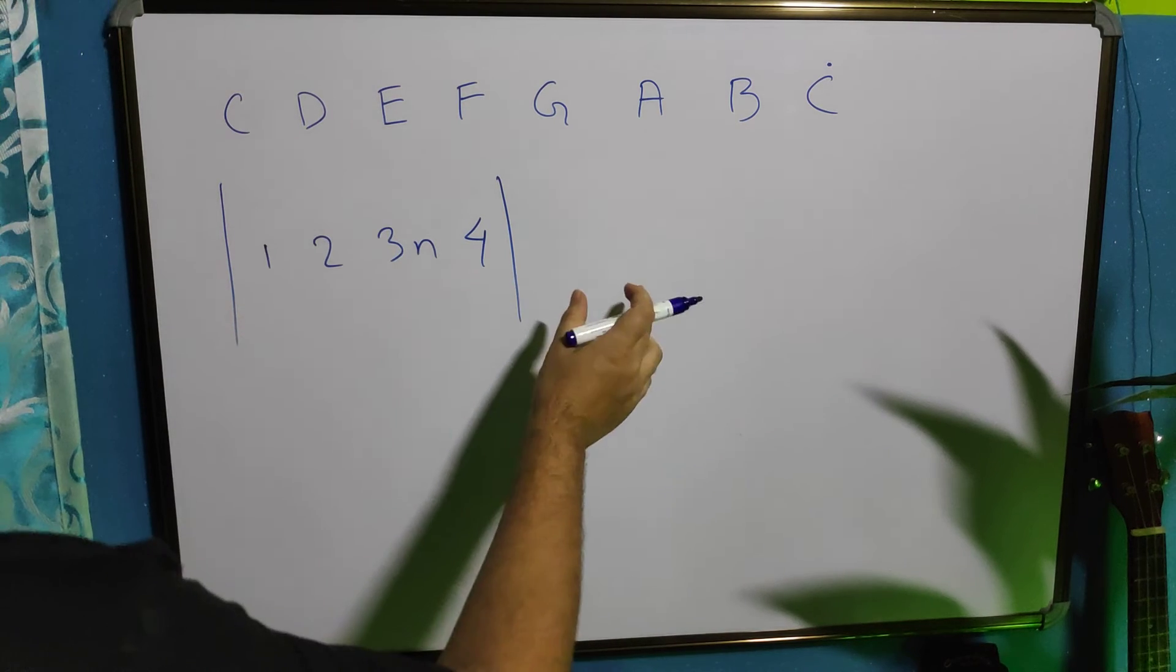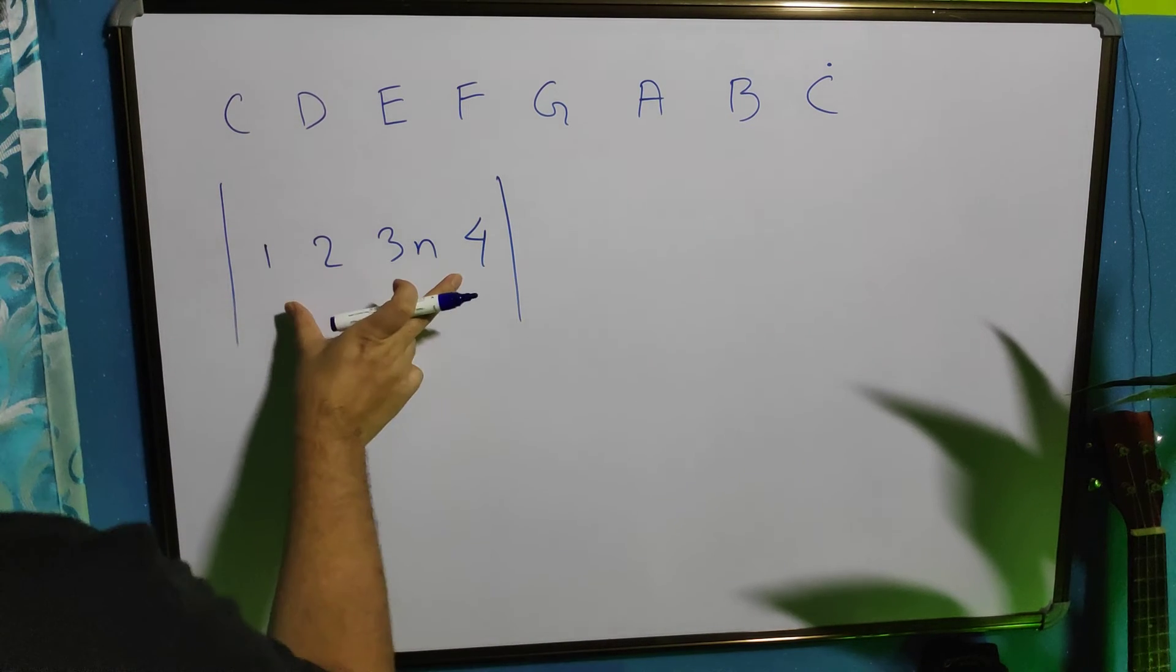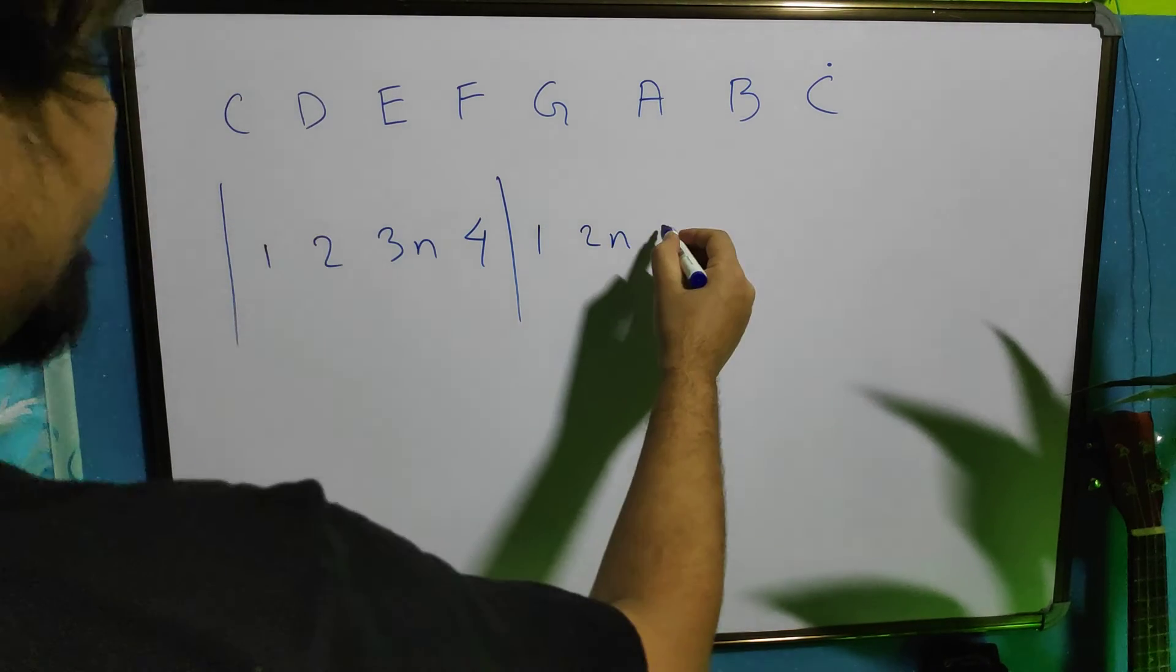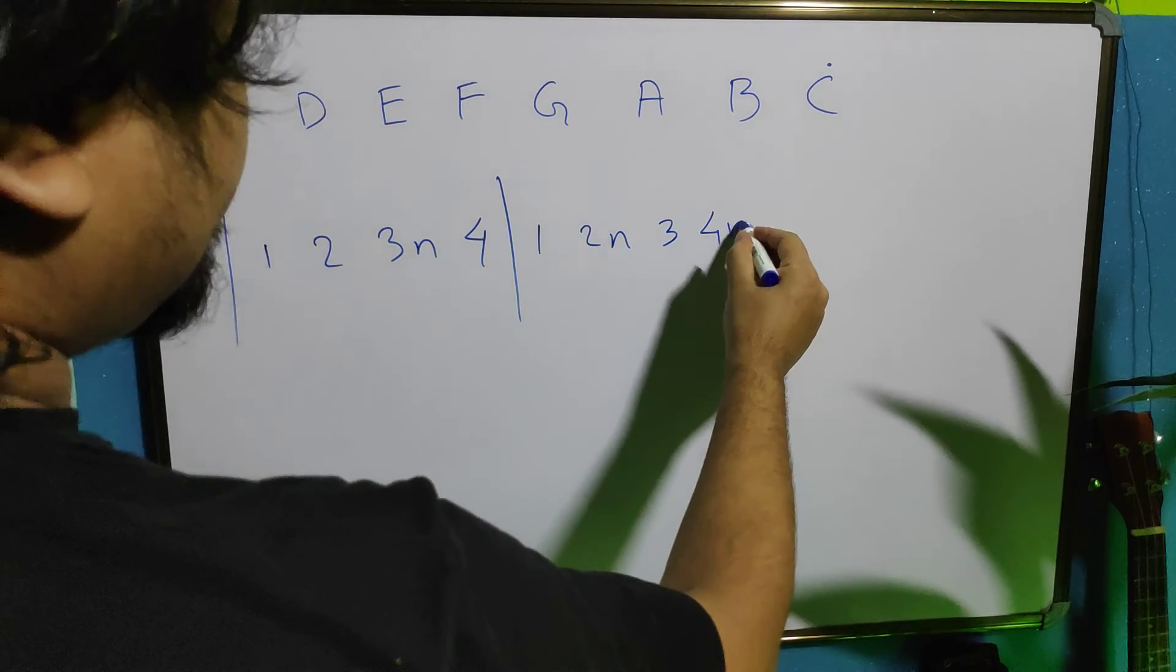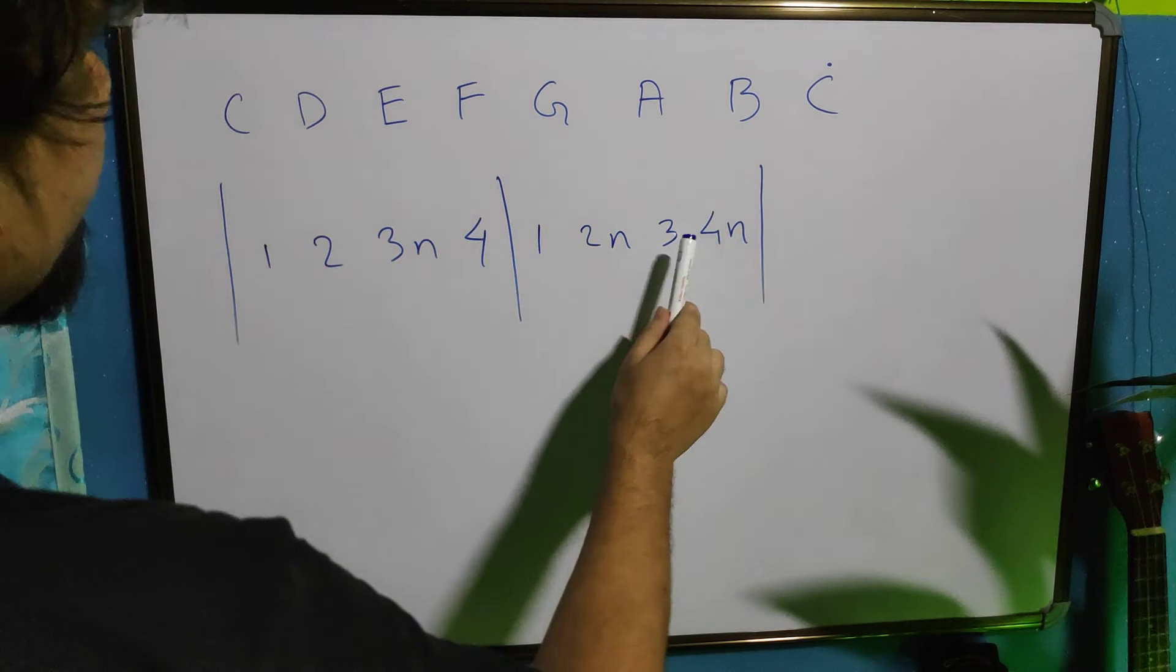Now the second bar, we will change it because we already played this. We will make some variation here. We will not do the same thing. We will make it 1, 2 and 3, 4 and.